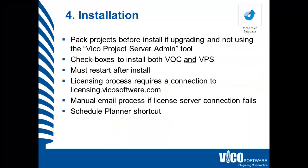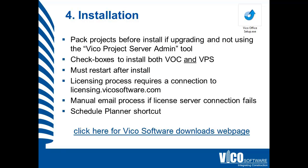Now we're ready for installation. Make sure that you have the latest VicoOffice installer from the Vico software website. If you've already been using a previous version of VicoOffice, you must back up your projects either by packing them or by using the Vico project server admin tool, found in the Vico software folder in the Start menu. You should also uninstall your existing version before installing the new version. If you intend to work locally, make sure you check both boxes to install the VicoOffice client application and the Vico project server. Remember the process requires a restart before opening VicoOffice for the first time, and to activate your license you will require an internet connection to the Vico license servers, so nothing must block that communication.